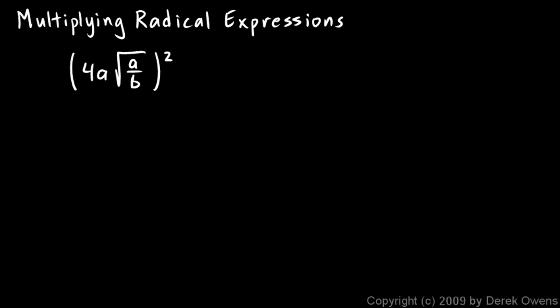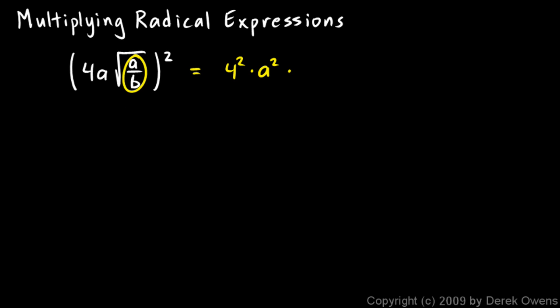In this case there are three things inside the parentheses — three things multiplied together: the 4, the a, and this radical. All three of those things get squared, so the answer is going to be 4 squared times a squared times this thing squared, and the square root of that squared is just a over b.